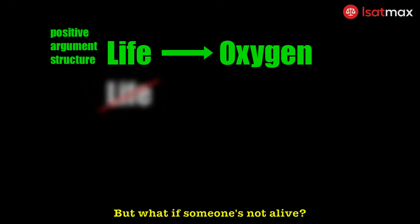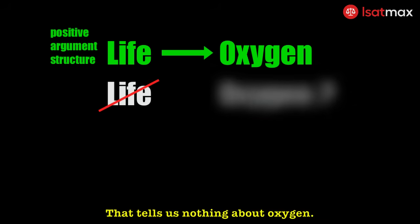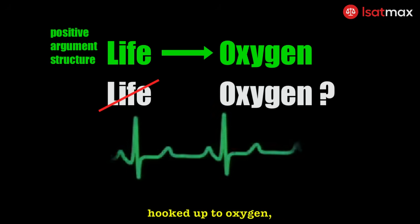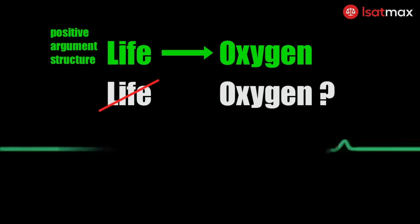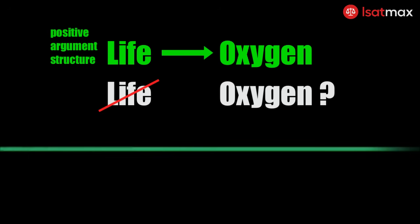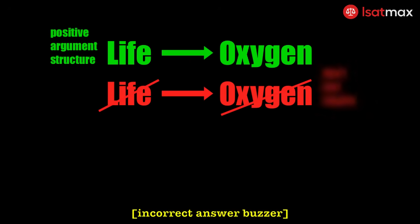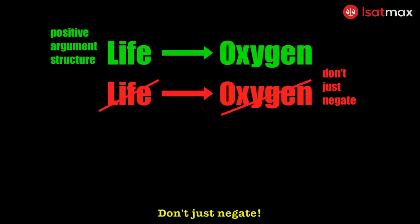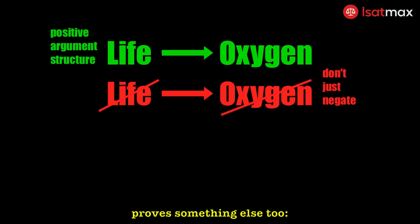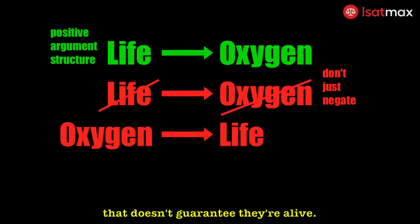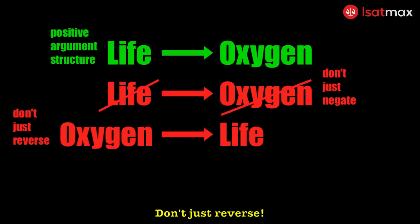But what if someone's not alive? That tells us nothing about oxygen. Think about someone in a hospital, hooked up to oxygen, who flatlines. They're gone, but the oxygen is still flowing. Don't just negate. And the same example proves something else too — even if someone has oxygen, that doesn't guarantee they're alive. Don't just reverse.